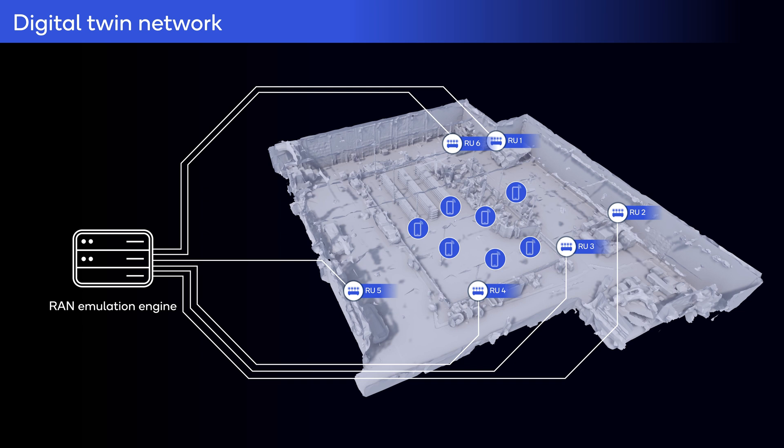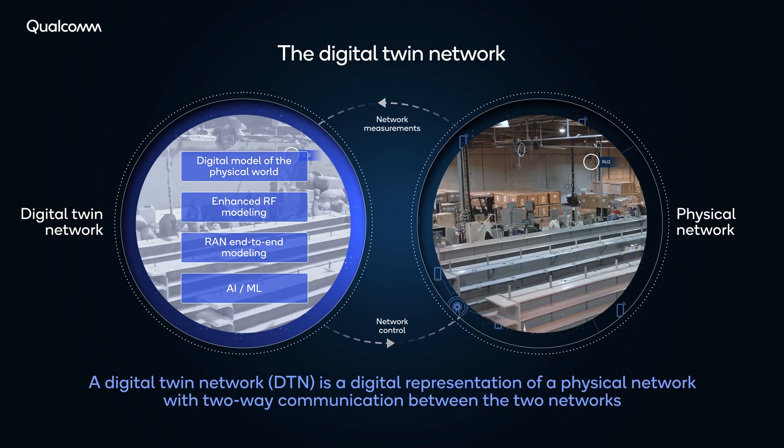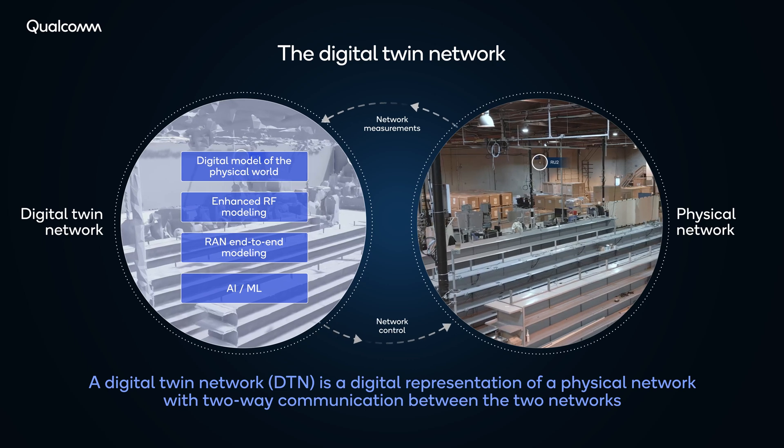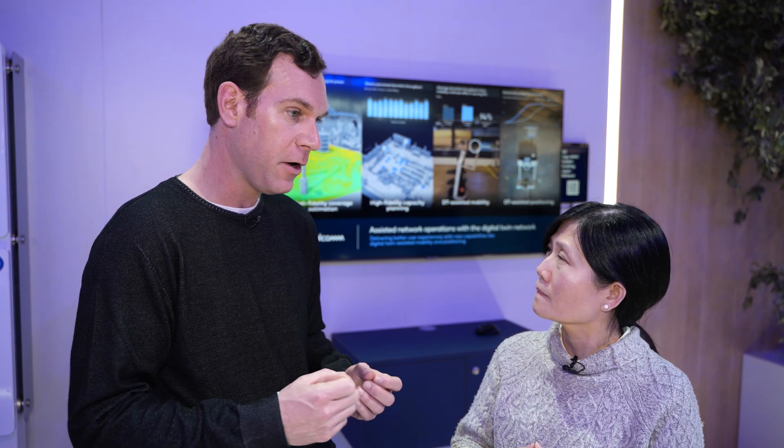That sort of virtuous cycle that you could create — where you make physical changes, see them digitally, make digital changes, and understand what they might do to your physical environment — that's quite impactful for a network operator. But just lay out for us: when operators have this technology in hand and can use it, what's the big picture look like? What's fundamentally different?